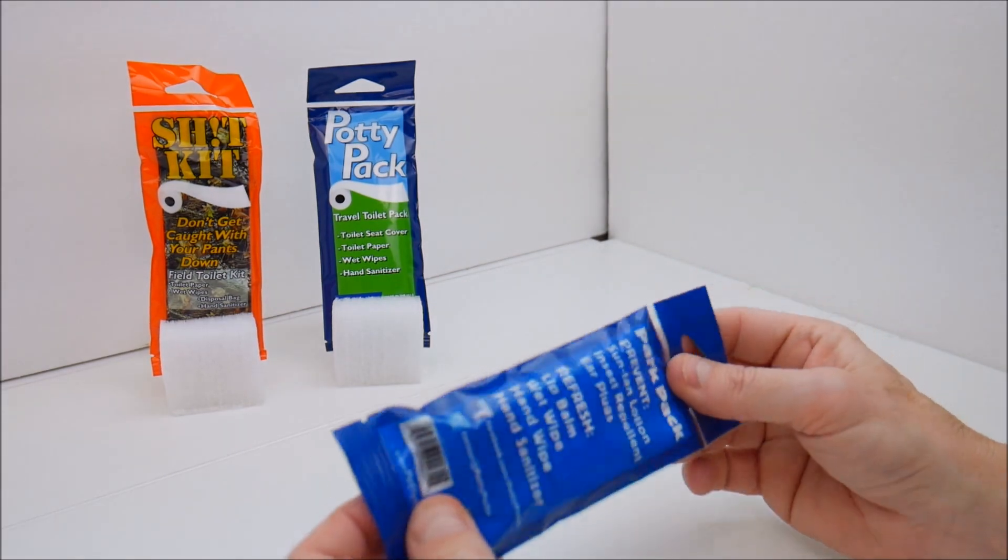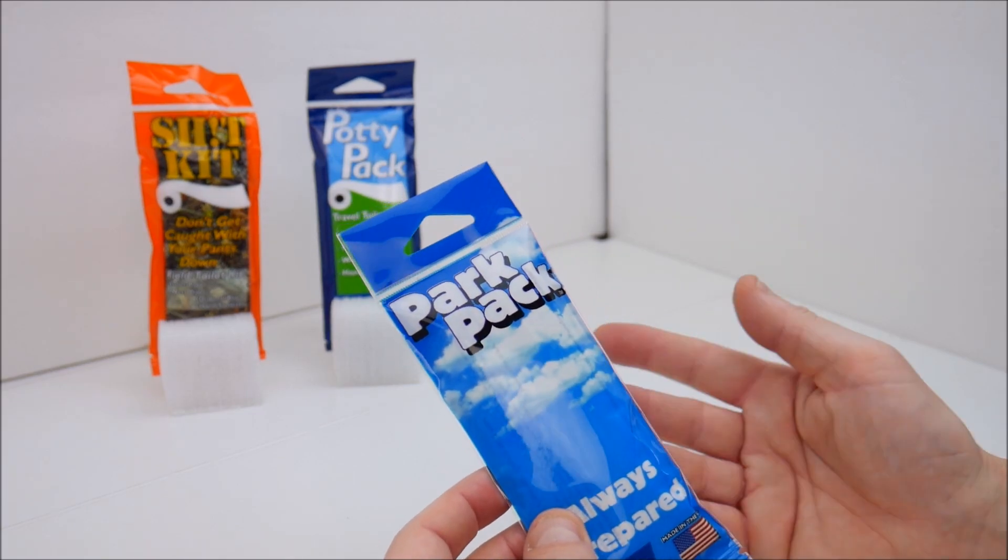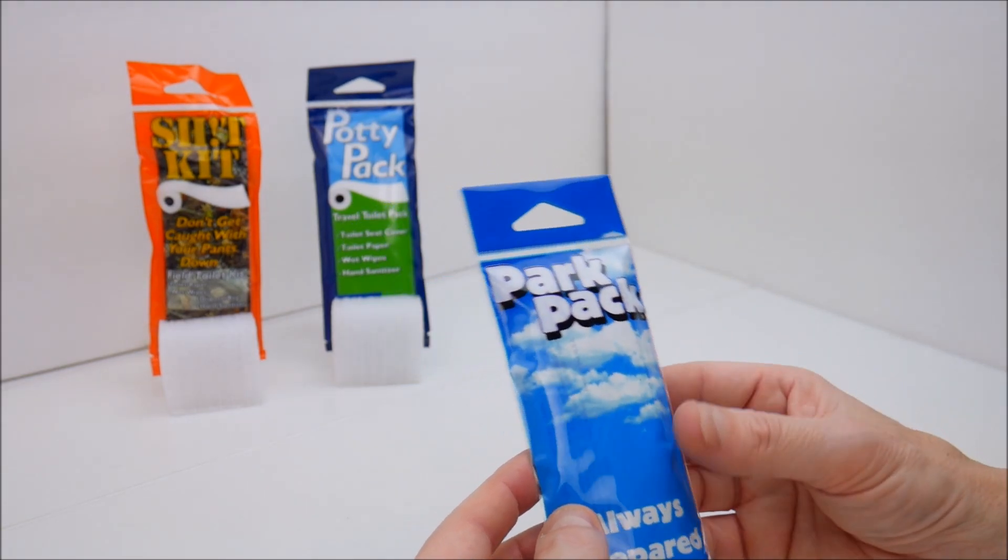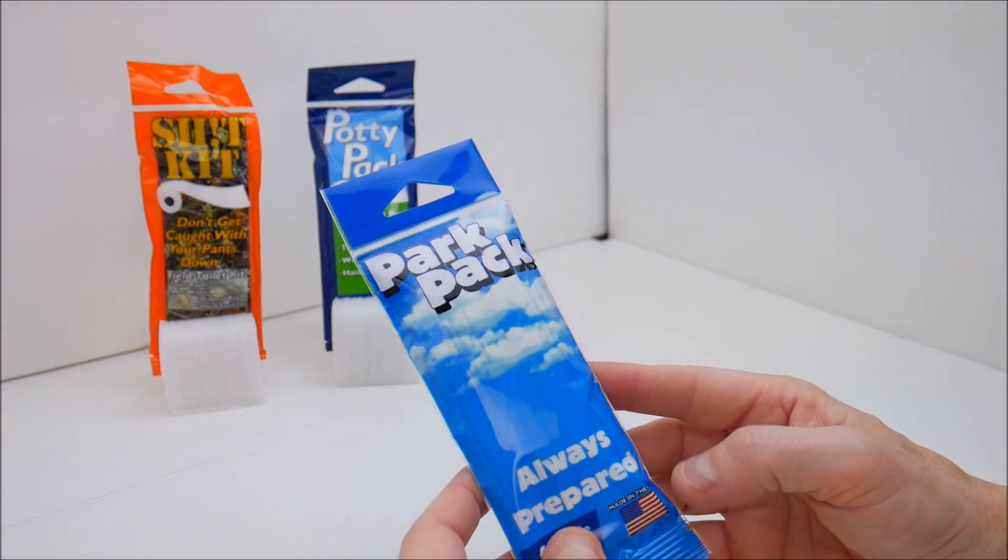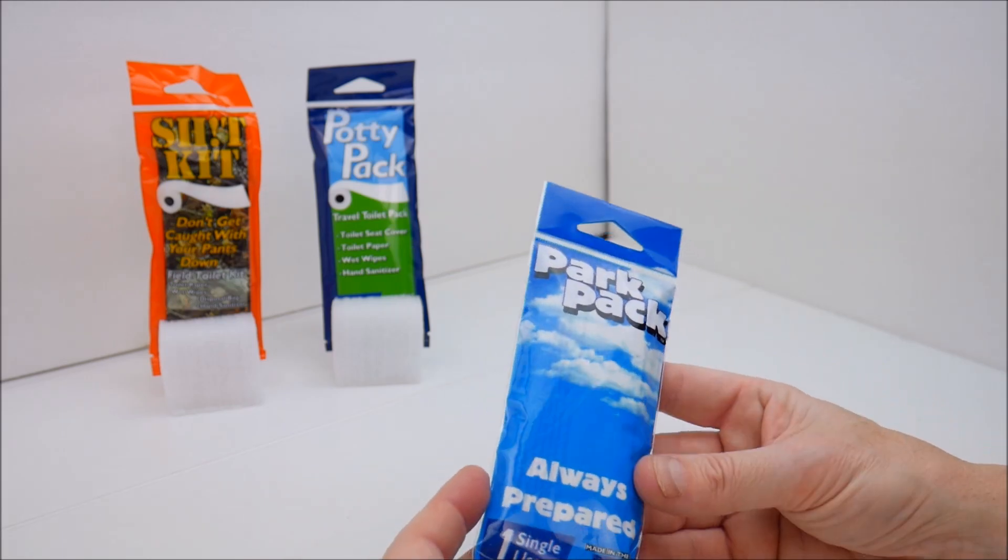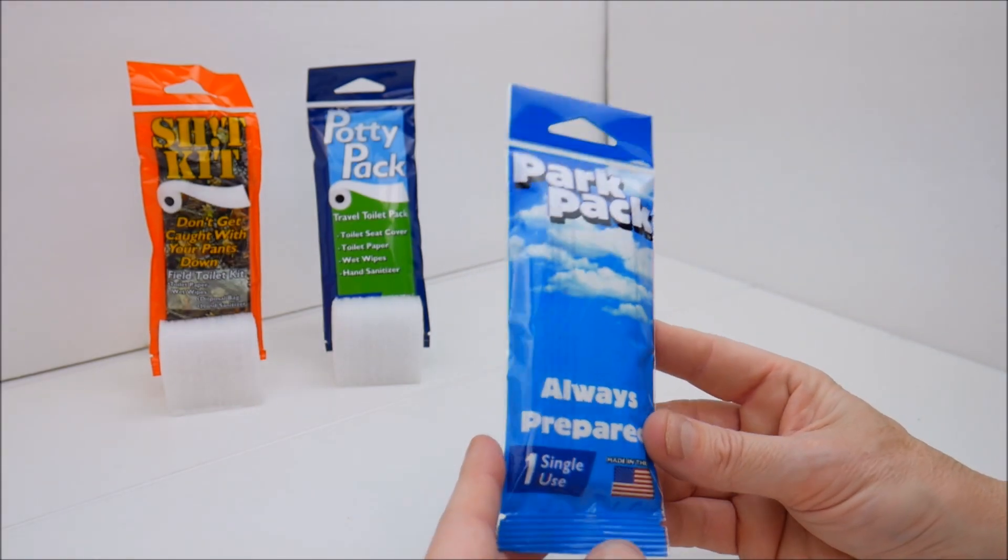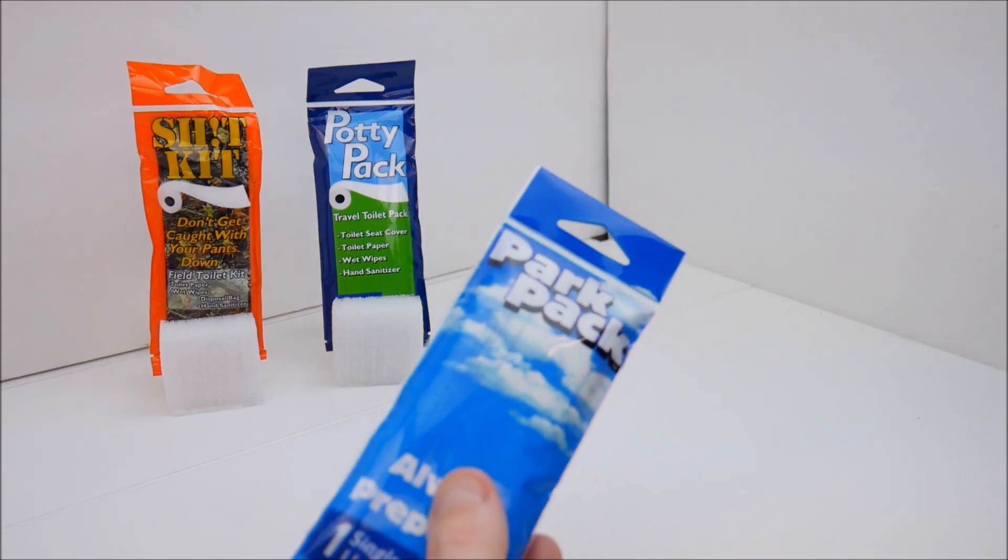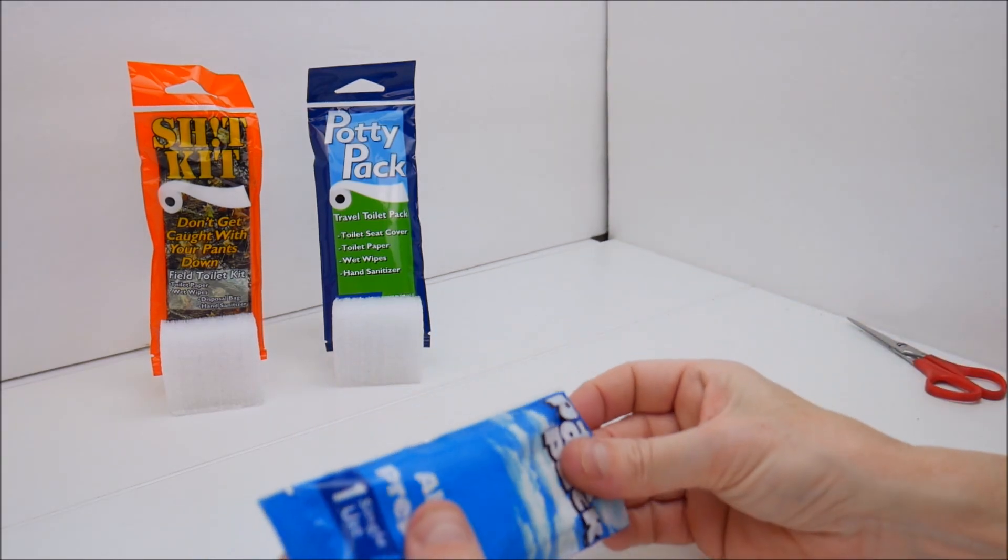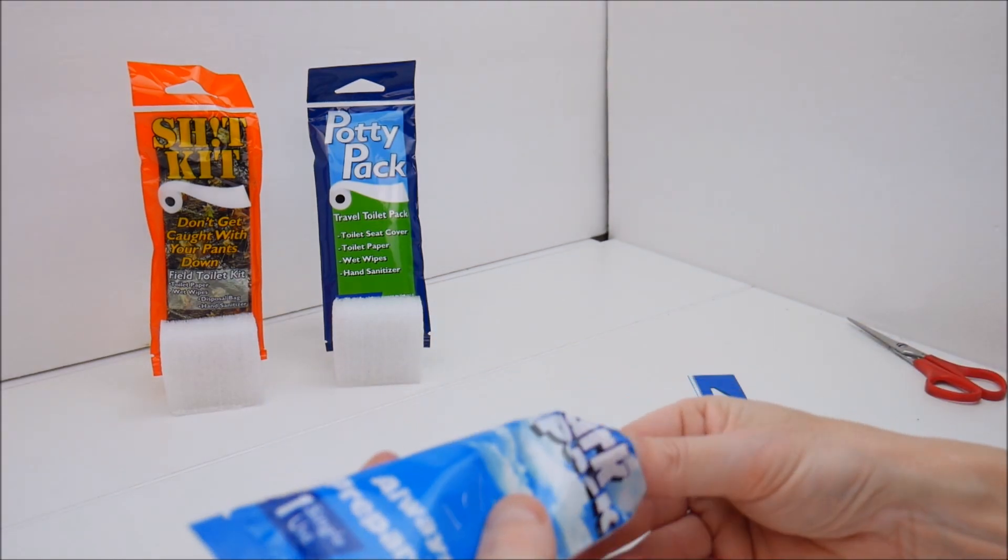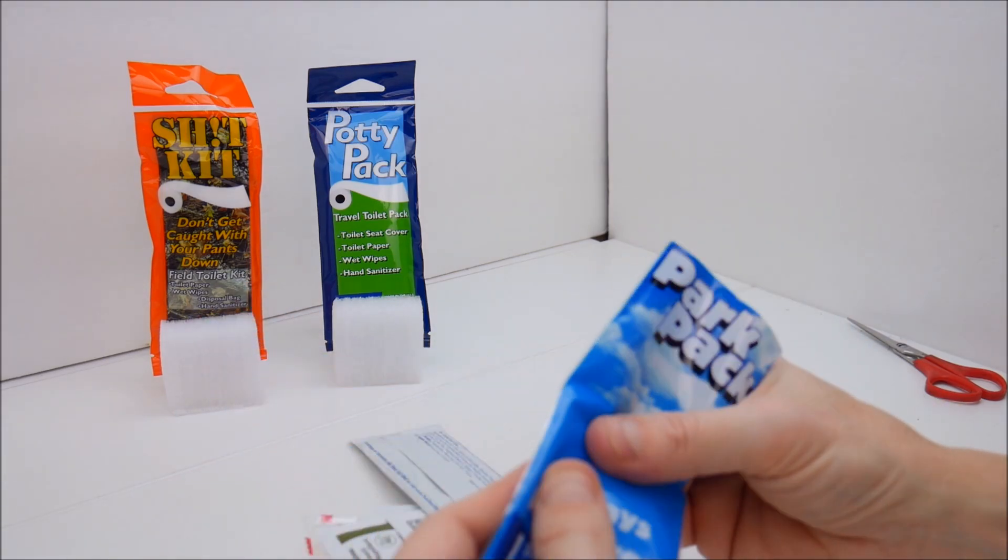These are hermetically sealed in retail POP packaging. You can store these in your range bag, trunk of your car, glove box, center console, everyday carry bag, backpack, hiking bag, whatever. You're not going to lose anything and things aren't going to get damaged because they're all in a nice sealed bag. Let's go ahead and open this one up and take a look at the contents.